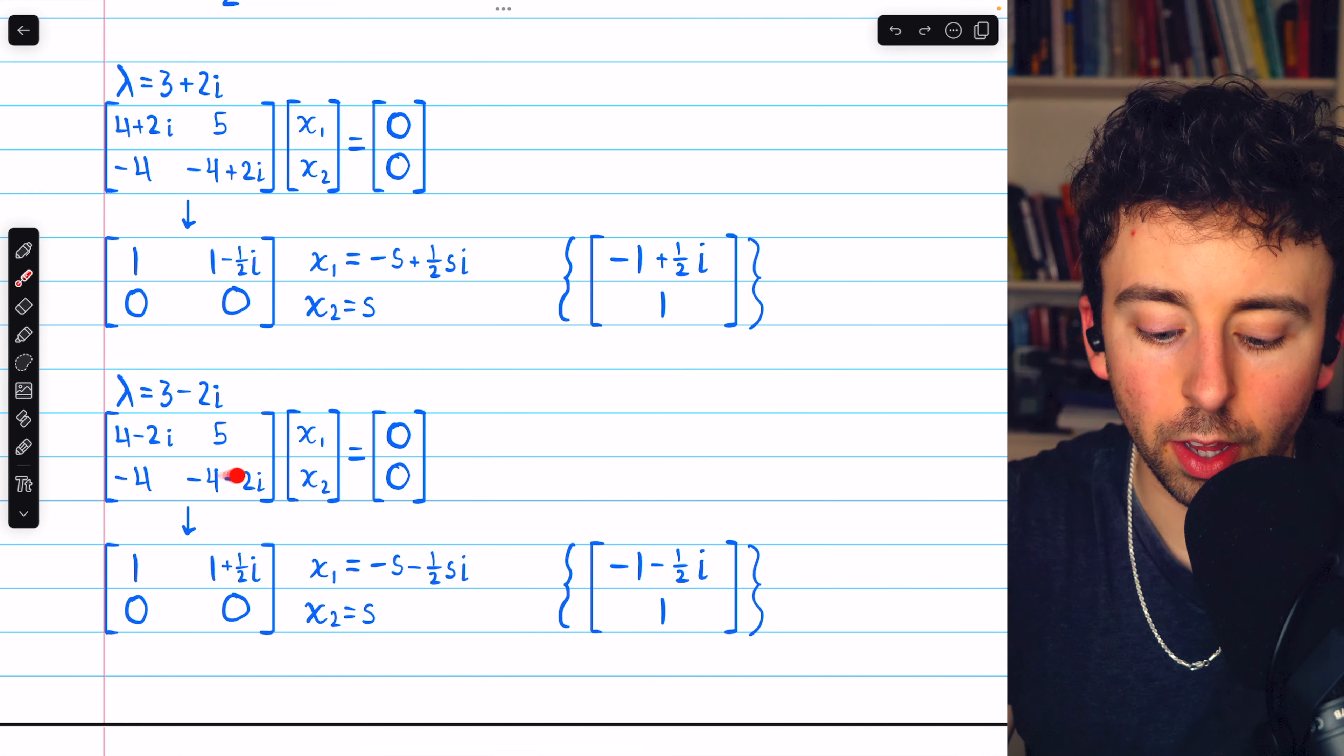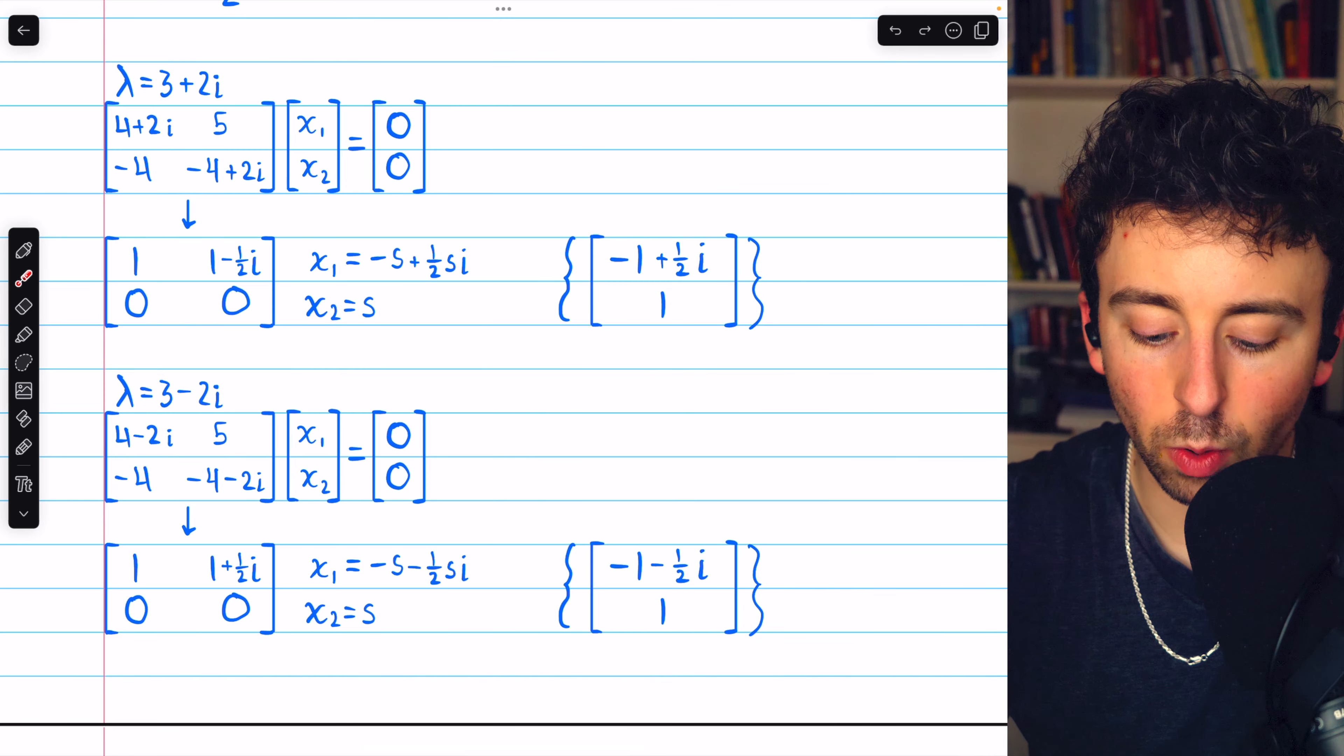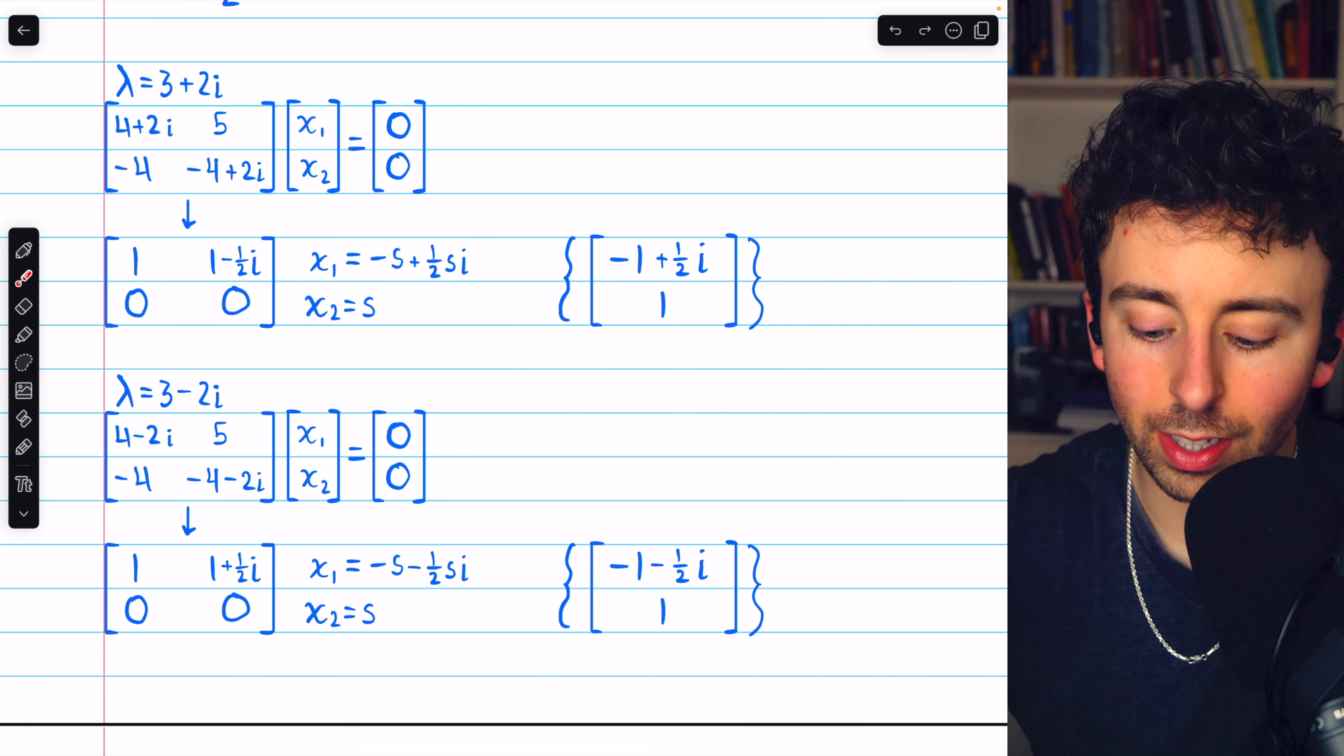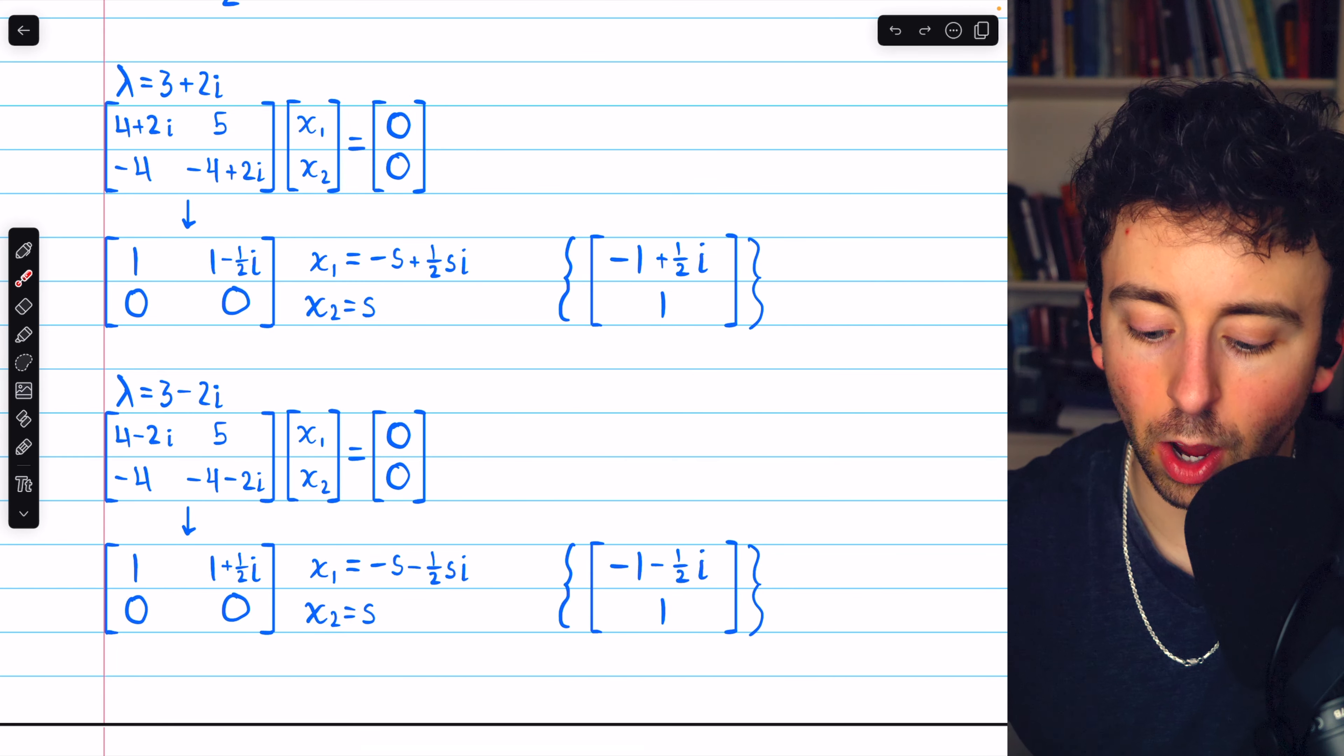That would make our new row 1 become positive 1, and 1 plus a half i. That gives us these solutions, which leads to this basis vector, the coefficients of s, negative 1, minus a half i, and 1.